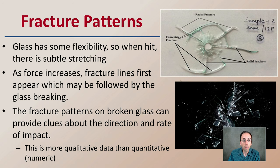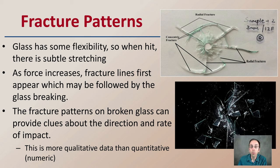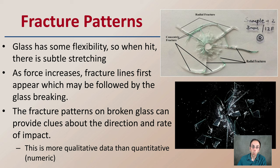First off, fracture patterns. Glass does have some flexibility when it's hit, so there's subtle stretching that can occur. As the force increases, fracture lines first appear, which may be followed by the glass breaking. We don't necessarily always need the glass to break to get fracture lines. It's really important to look at these details because fracture patterns on broken glass can provide clues about the direction and also the rate of impact. Even though this is more qualitative than quantitative data, it still can provide some valuable information.